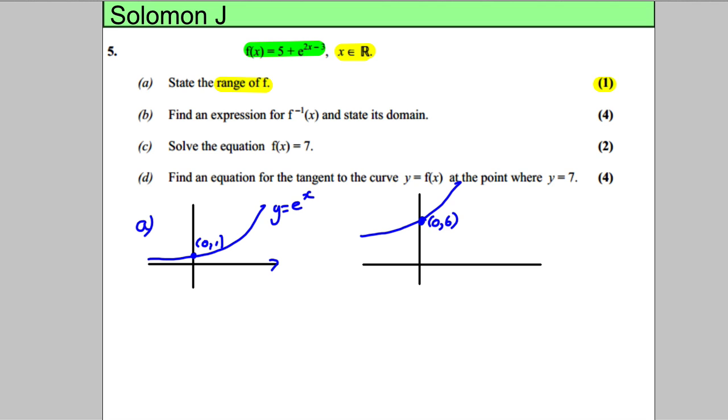Now there might be some squashing etc of the x axis but it looks like that's been shifted up 5 so therefore what y values can it take? Well f of x must be bigger than 5.